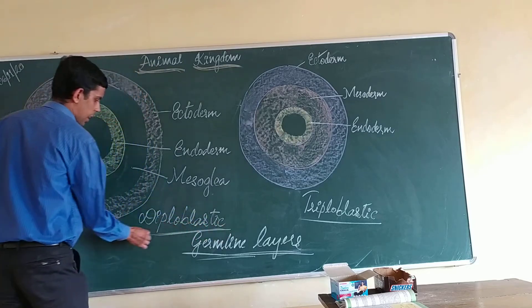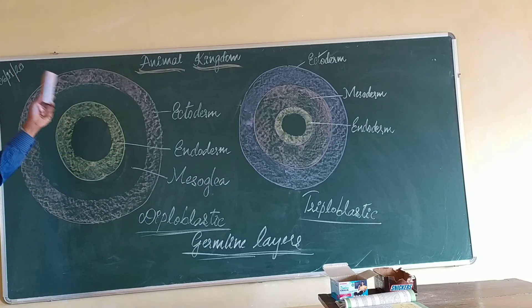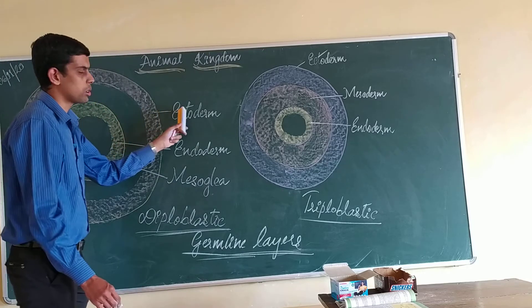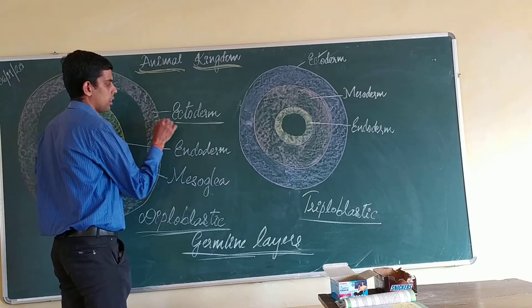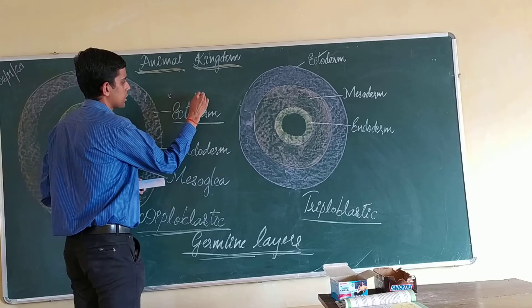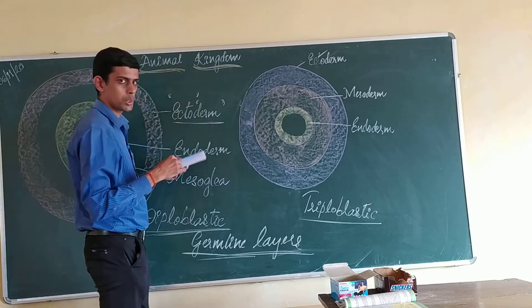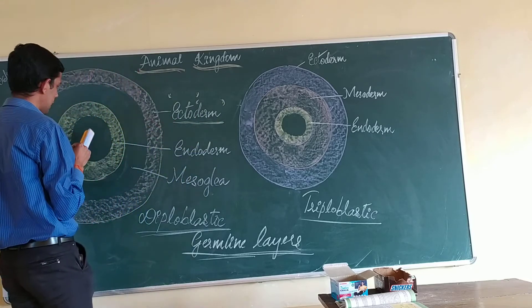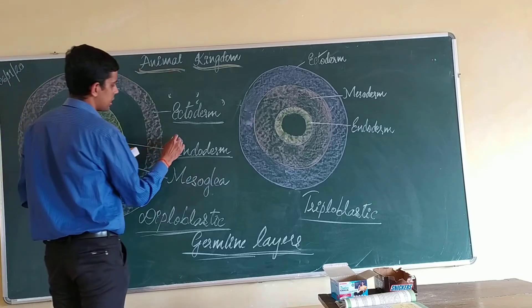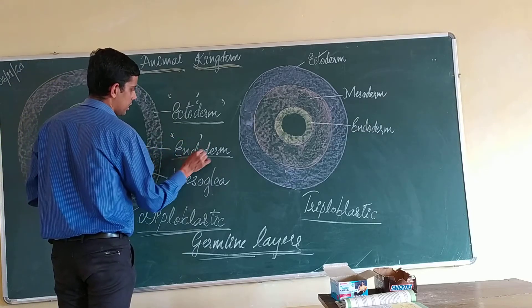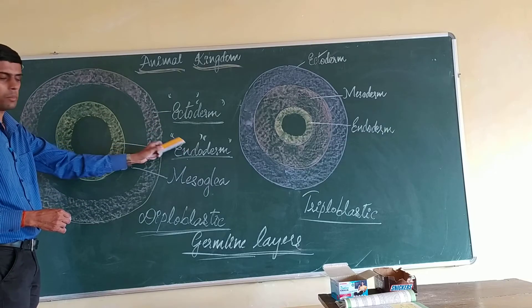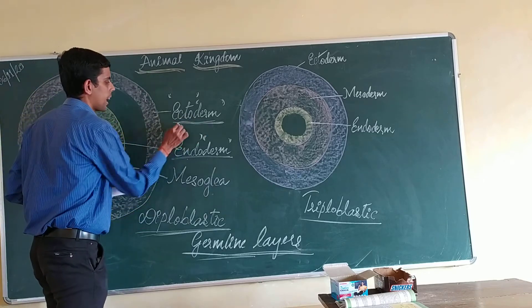There are two types. The first one is diploblastic animals, where you find only the outer layer and the innermost layer. The outermost layer is called ectoderm — 'ecto' refers to outside and 'derm' refers to layer. The innermost layer is called endoderm — 'endo' refers to inner and 'derm' refers to layer.